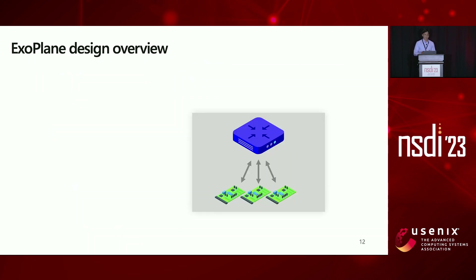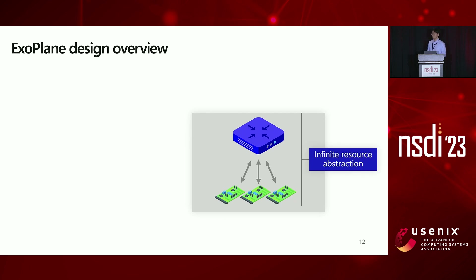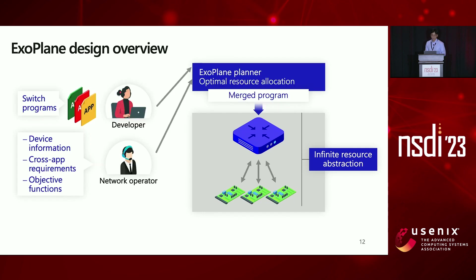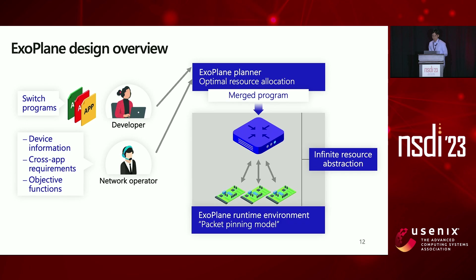Building on the packet-pinning model, we designed ExoPlane, an operating system that provides an infinite switch resource abstraction. It consists of two key components. One is the ExoPlane Planner, which takes input from app developers and the network operator and optimally allocates resources to applications and generates merged programs. The second component is the ExoPlane runtime execution environment, which executes workload across the switch and external devices based on the packet-pinning model. While this overall design looks simple, we had to address several challenges to realize this approach.